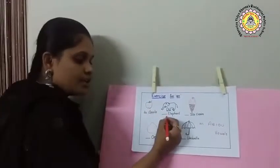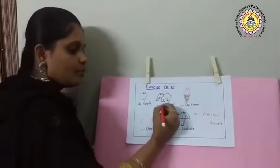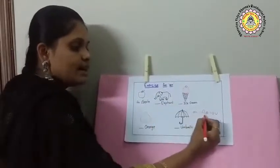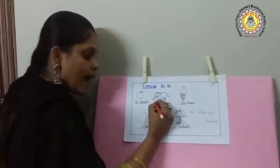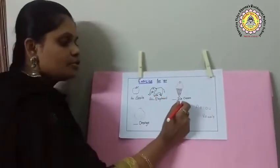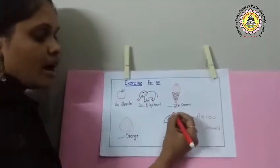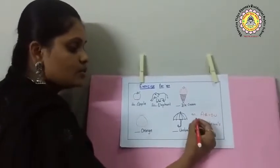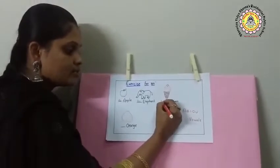Coming to the next one — how many elephants do you see? One. What is the starting letter? E. E is one of the vowel letters A, E, I, O, U, so we get: an elephant. Coming to the ice cream — what is the first letter? I. I is also one of the five vowel letters, so what do we get? AN. An ice cream.